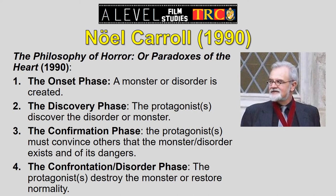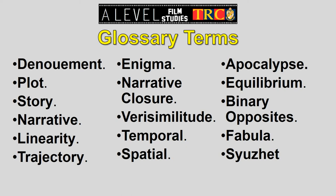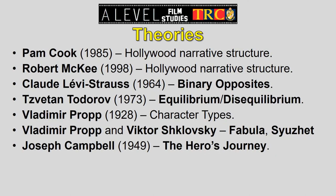Key terms for your glossary: denouement, plot, story, narrative, linearity, trajectory, enigma, narrative closure, verisimilitude, temporal, spatial, equilibrium, binary opposites, fabula, and syuzhet. Key theorists: Pam Cook, Robert McKee, Claude Levi-Strauss, Zvetan Todorov, Vladimir Propp, Propp and Viktor Shklovsky, and Joseph Campbell.